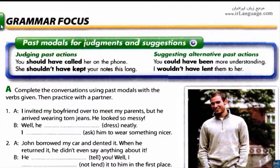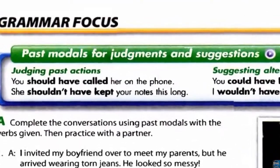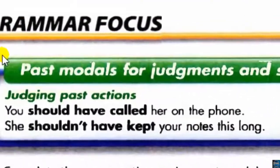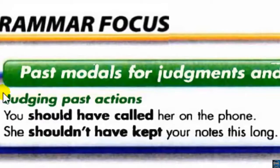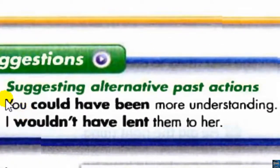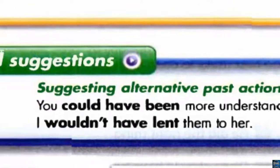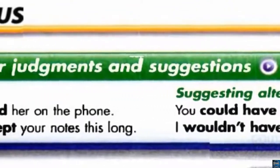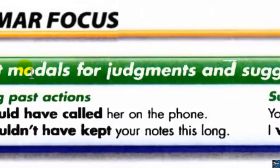Exercise number 9, Grammar Focus, page 89. Past modals for judgments and suggestions. Judging past actions: 'You should have called her on the phone.' 'She shouldn't have kept your notes this long.' Suggesting alternative past actions: 'You could have been more understanding.' 'I wouldn't have lent them to her.' These are past modals — would, can, could, shall, should.